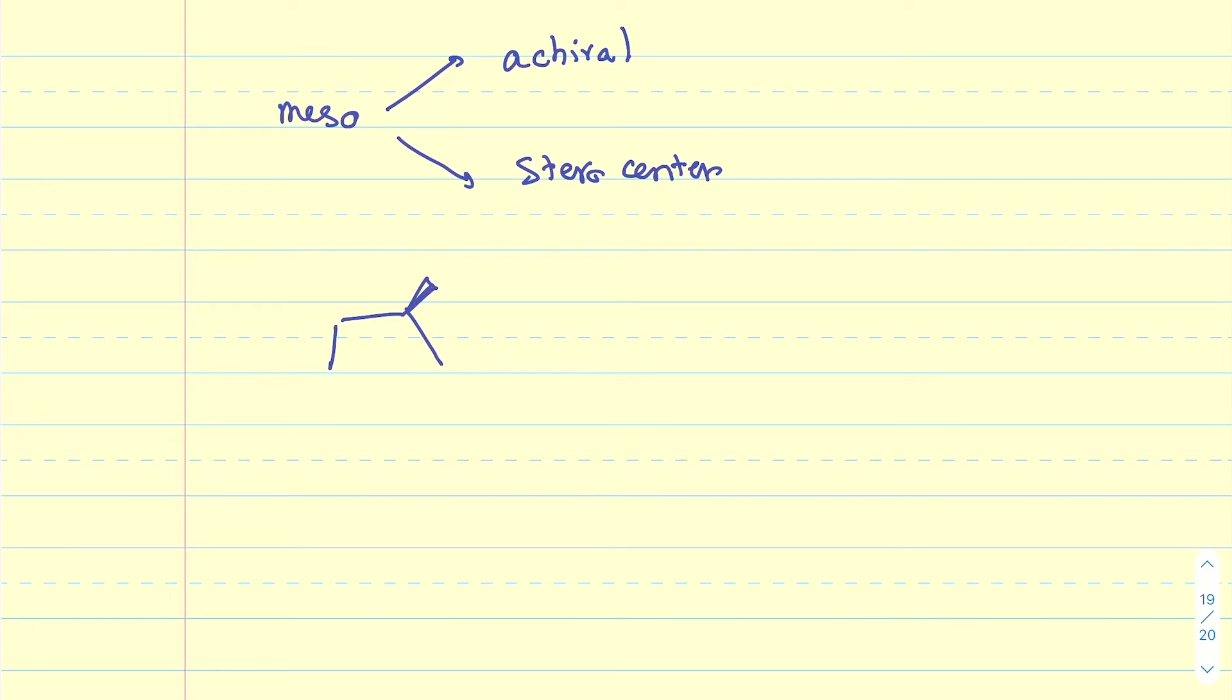Let me show you an example. For instance, this compound. This compound has two stereocenters, but because of the fact that it has a plane of symmetry, it is achiral and thus it's meso.